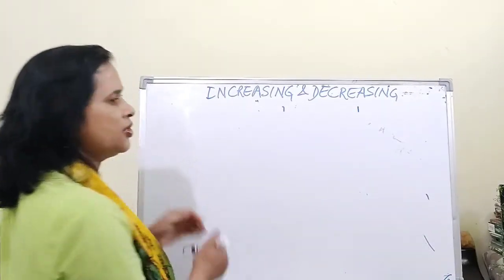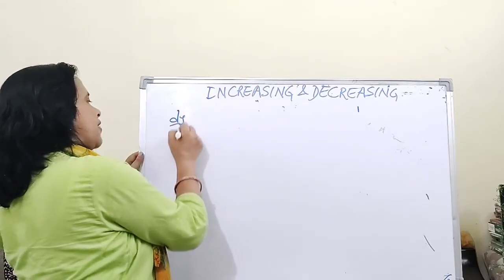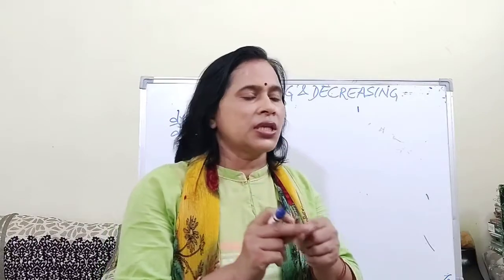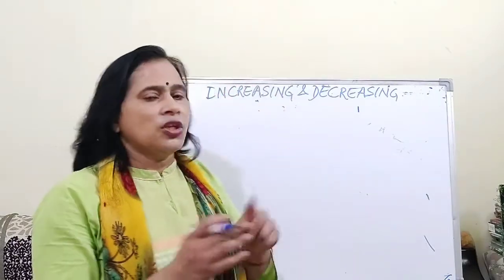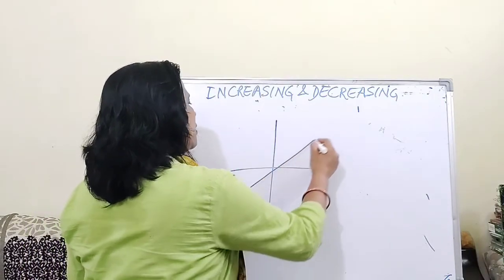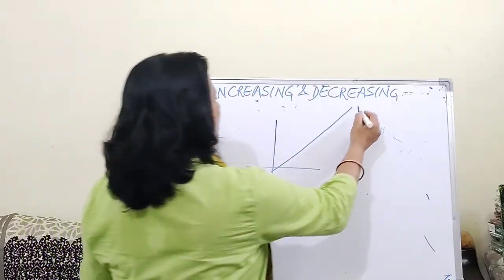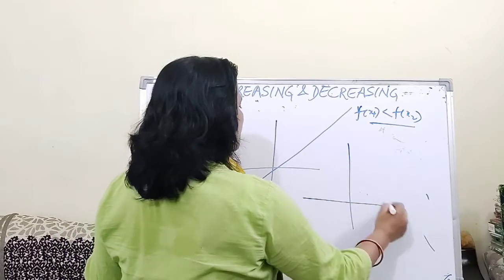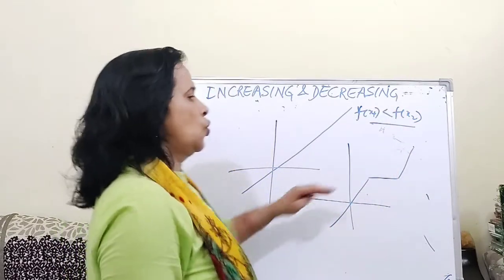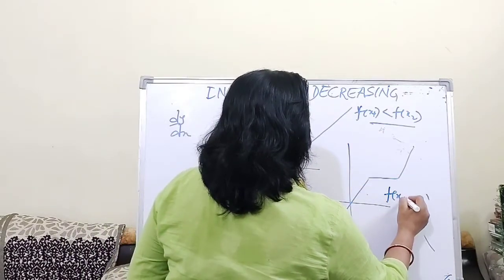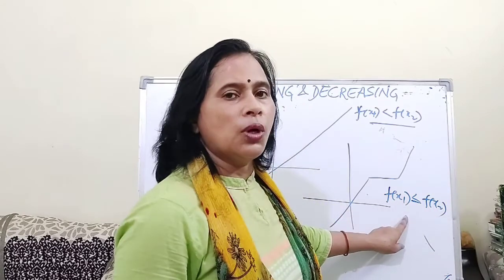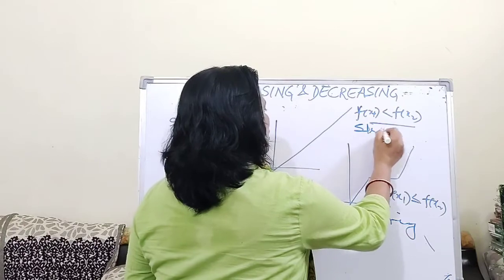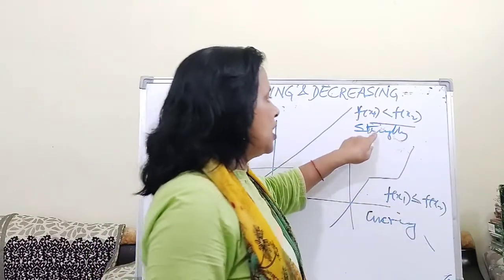Now I want to emphasize two important words: strictly increasing and simply increasing. Strictly increasing means f(x1) < f(x2), while simply increasing means f(x1) ≤ f(x2) — that is, with the 'equal to' included. These are two distinct terms.